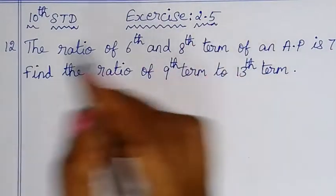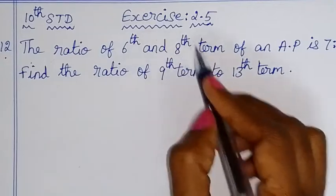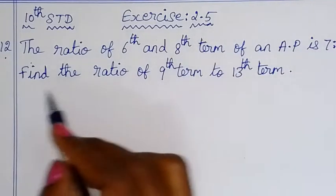Hello children, in exercise 2.5, sum number 12: The ratio of 6th and 8th term of an AP is 7 is to 9. Find the ratio of 9th term to 13th term.